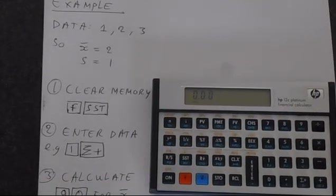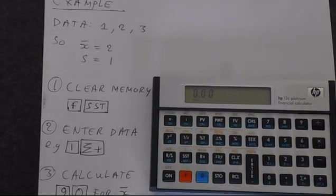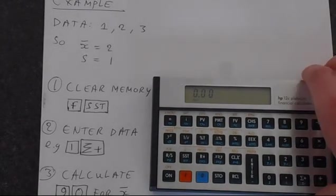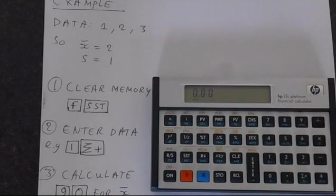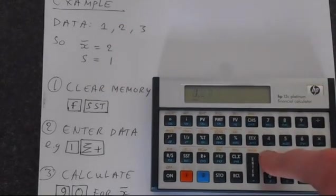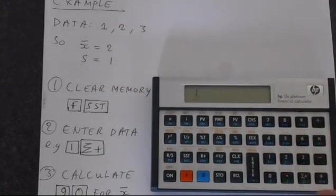Then we need to enter our data, and to do this we're going to use the sigma plus button. So essentially we're adding a number to the statistics menu. So we've just got 1, so you press the number 1, put the number in first. So 1, and then sigma plus, which is down in the right-hand corner of your calculator next to the plus button.